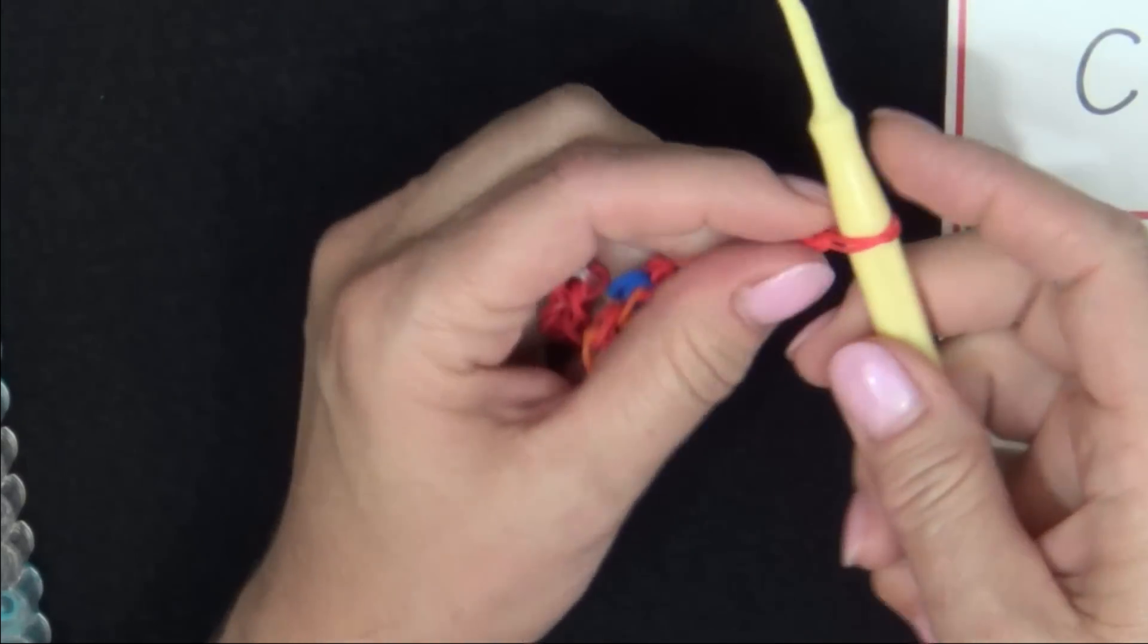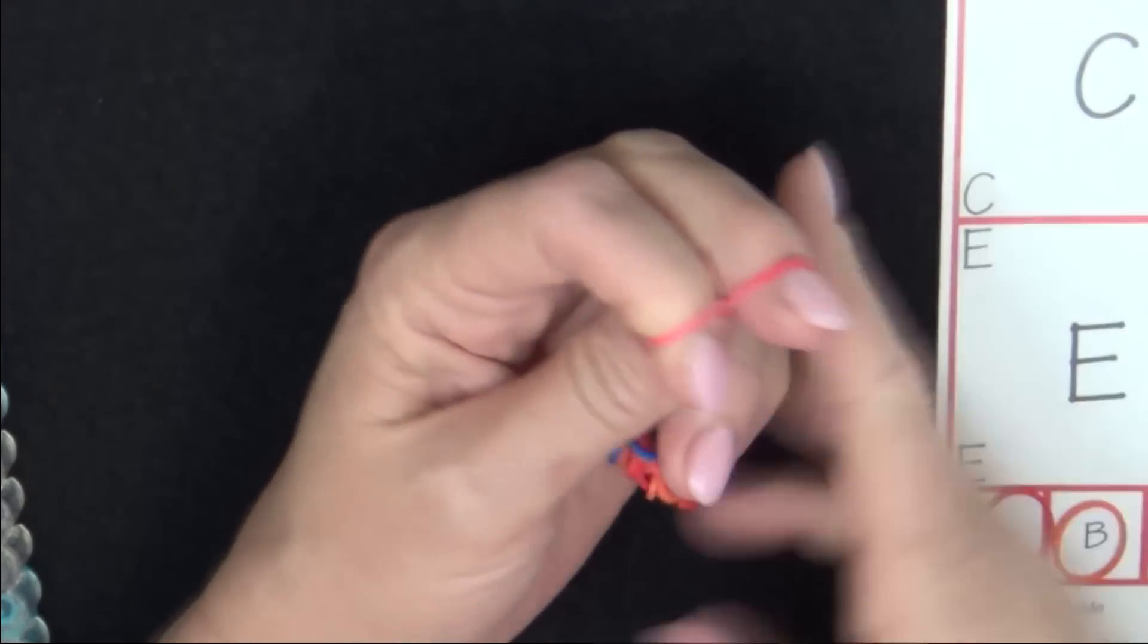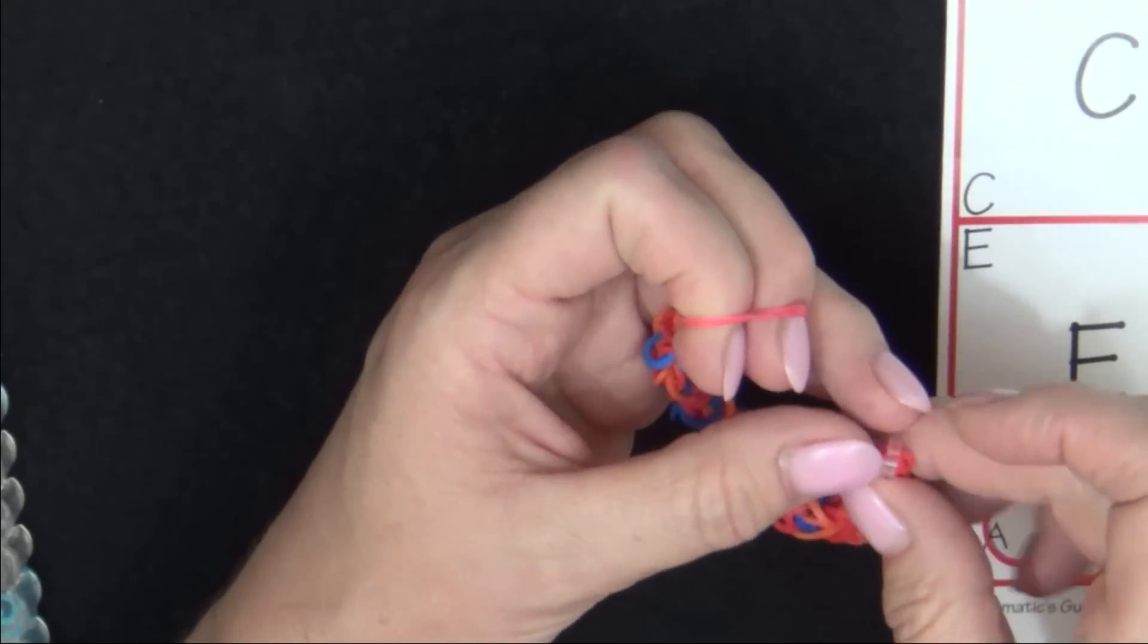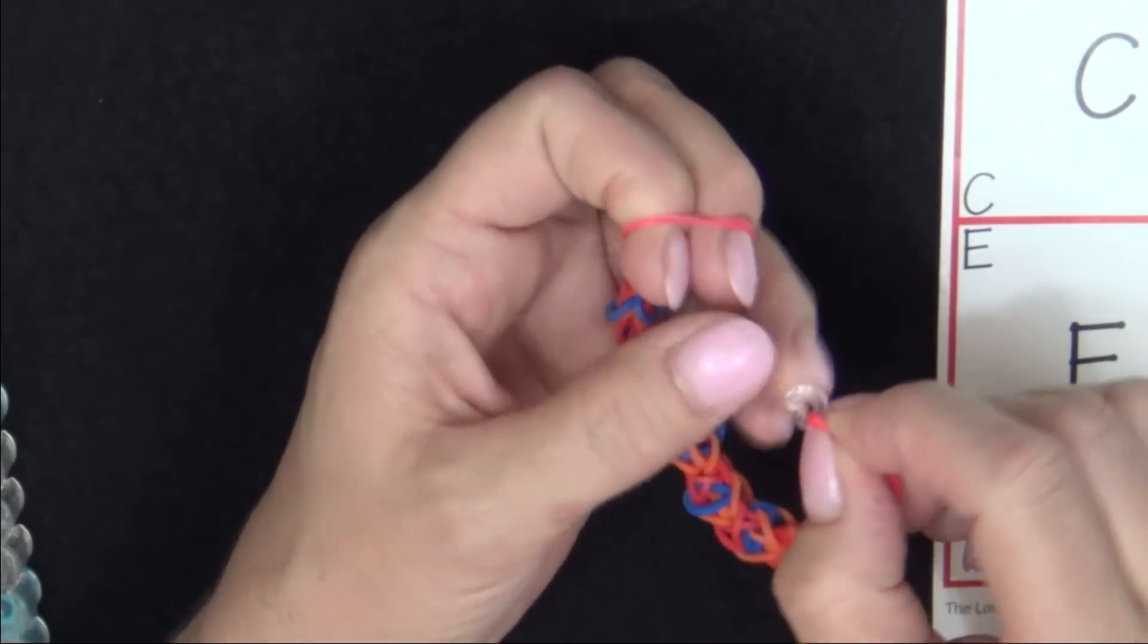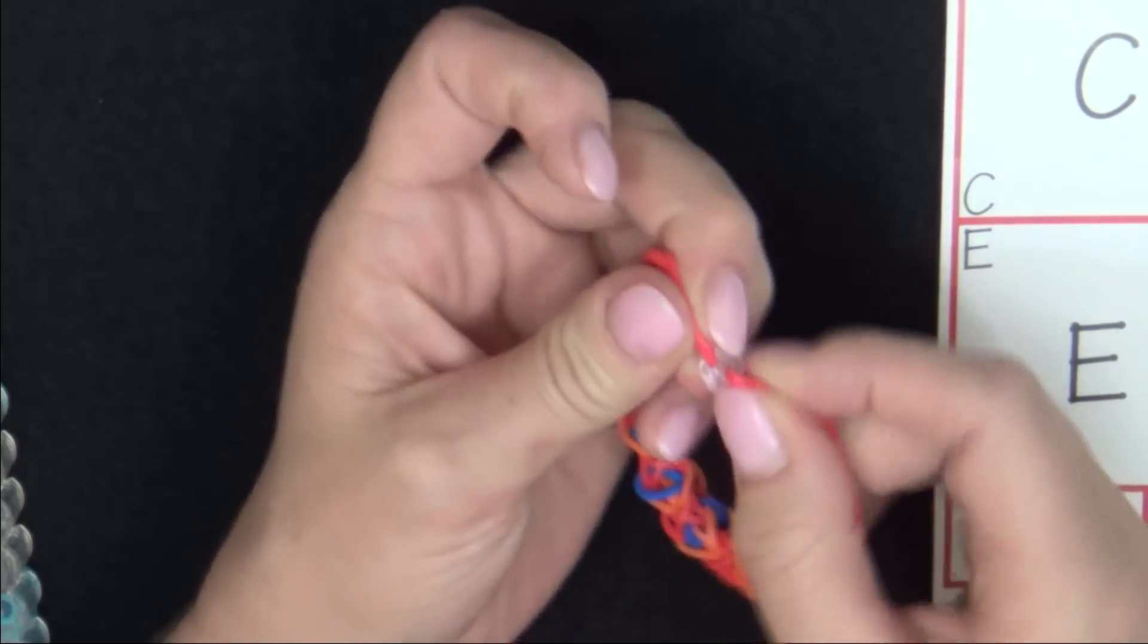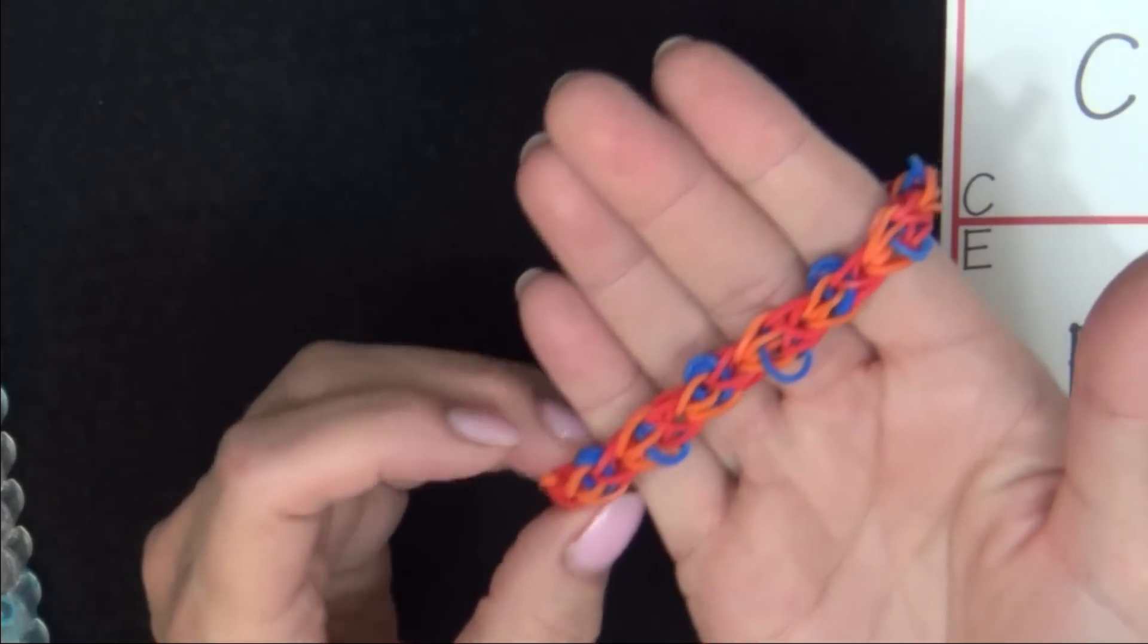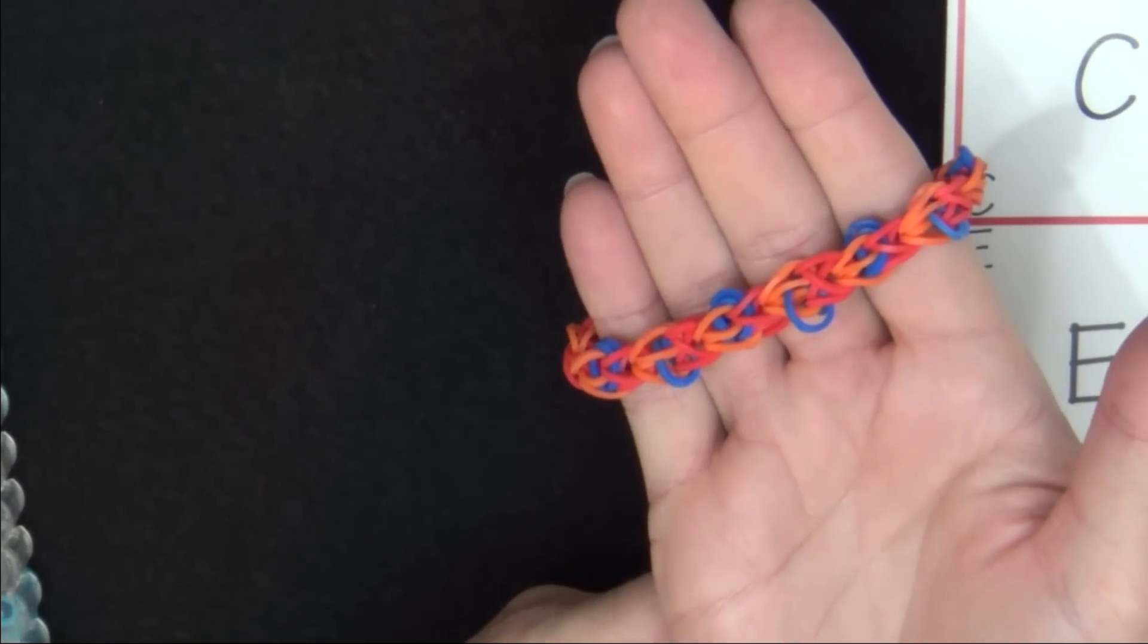On the other end of your bracelet, pull the hook away. Slide your two fingers in. This creates another area where you can attach the other side of your C-clip. Hold all bands to one side. And then secure those on the other side of your C-clip. And there we have the finished speckled rhombus bracelet.